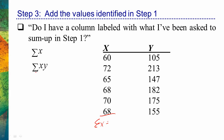If given sigma xy, I'm being asked to sum up the product of x values times y values. Step two: I'll add a column with x times y — 60 times 105, 72 times 213, and so forth. Then in step three, I ask: do I have a column labeled with what I've been asked to sum up? I've been asked to sum up x's times y's. Here's a column of x's times y's — yes, I have it. Now it's time to add them all up.